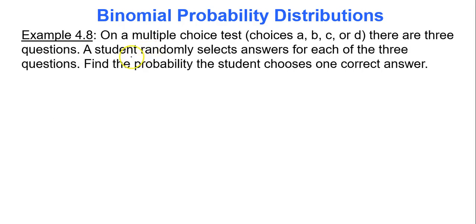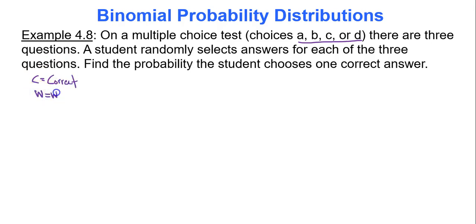To scaffold into the binomial probability distribution formula, let's do some probability calculations by hand. On a multiple choice test with choices A, B, C, or D, there are three questions. A student randomly selects answers for each question. Find the probability the student chooses exactly one correct answer.